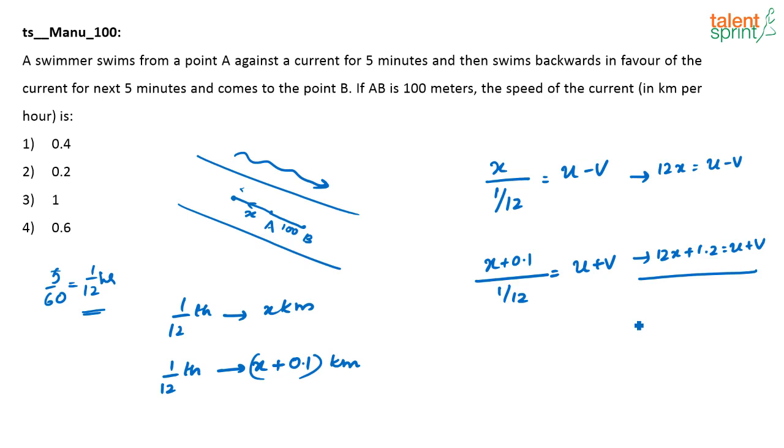You will get minus 2V equals... the 12X terms cancel. Minus 2V equals minus 1.2, or V equals 0.6.